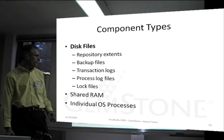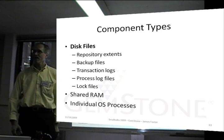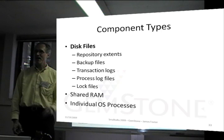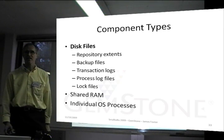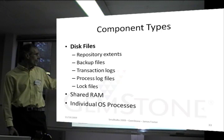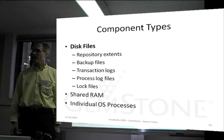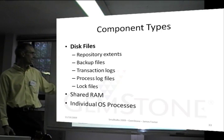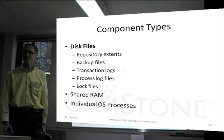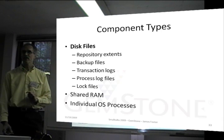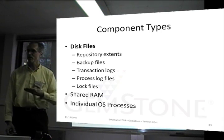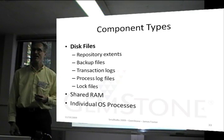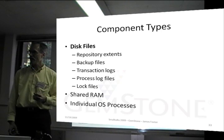On disk, we have a variety of things. We've mentioned the extents — the repository is a logical concept made up of a number of extents, and the extents are the actual things stored on disk. You also have backup files, so we make a backup of the database that exists on disk. Transaction logs: it's a real database, so each time you commit a transaction, before the commit finishes, we've written a record of that transaction to a transaction log file.